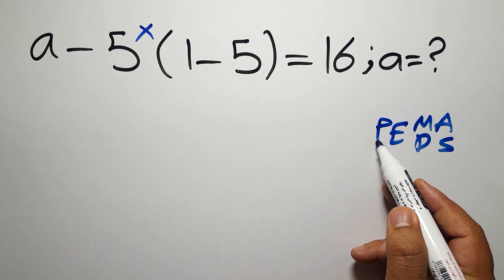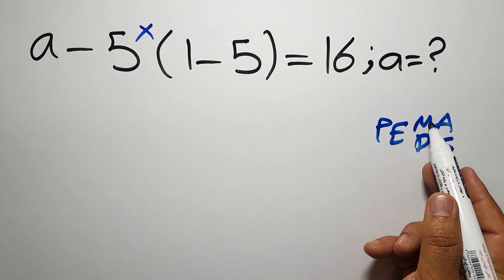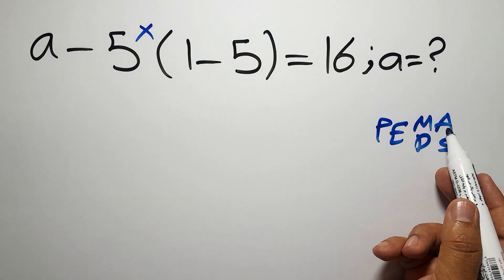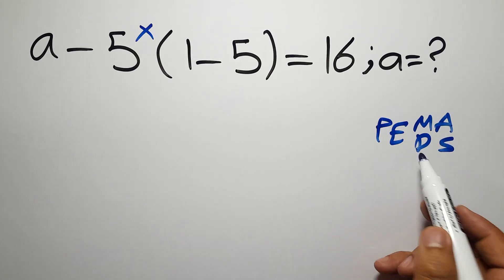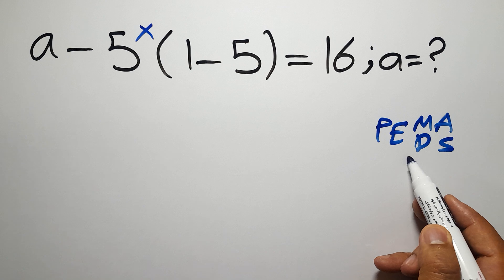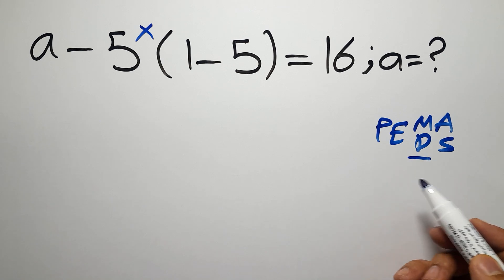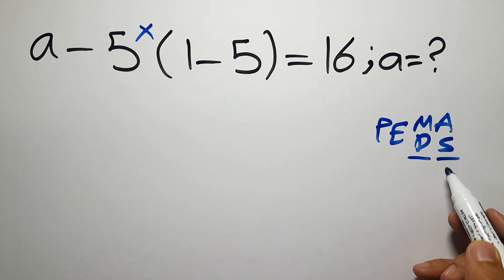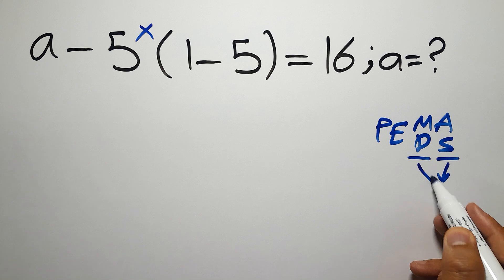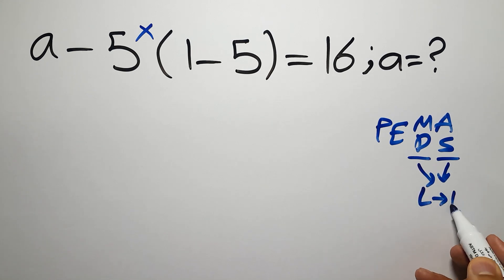So first, we have to do parentheses, then exponents, then multiplication or division, and finally addition or subtraction. Remember that multiplication and division have equal priority, and we have to work from left to right, and the same applies to addition and subtraction. Left to right.